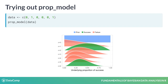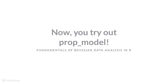That was a quick little example of a simple Bayesian model. Now, prop_model isn't part of any R package — I just made it myself — but at the end of this course you will know enough to implement it yourself too.